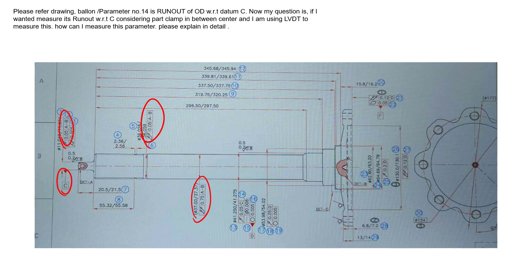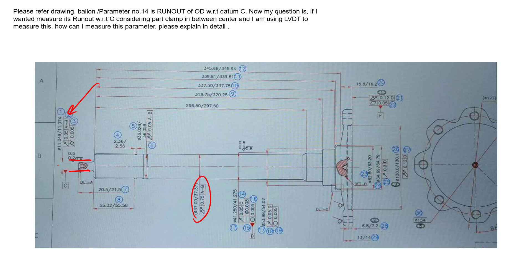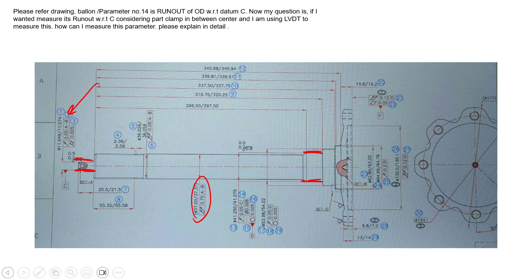What we also see is that we've re-established this feature — which was being controlled to datum axis A-B — as datum feature C. We qualified it to datum axis A-B and re-established it as datum axis C. Item number 14 in question is actually being controlled back to datum axis C, which is derived from datum feature C. So we're checking to make sure this diameter runs true to the axis of that feature — and that's exactly what we're trying to accomplish.